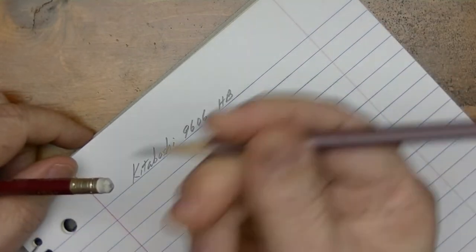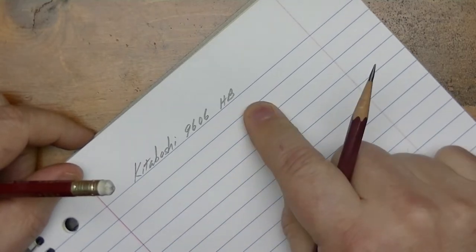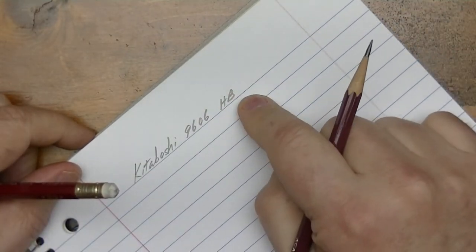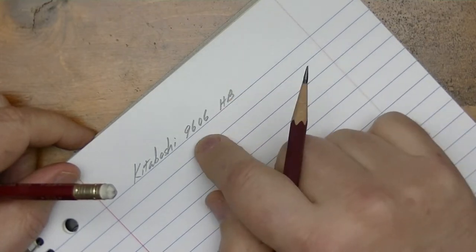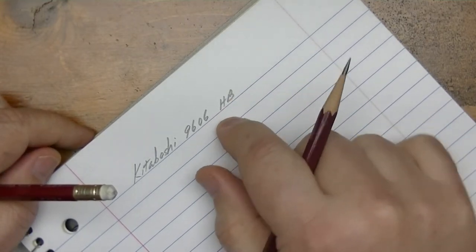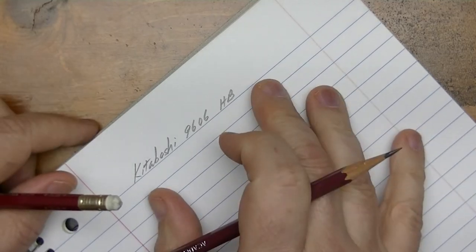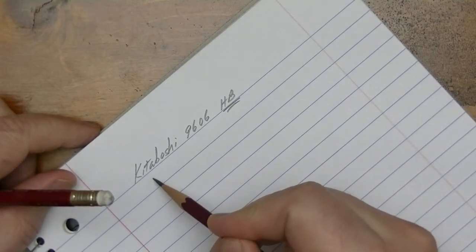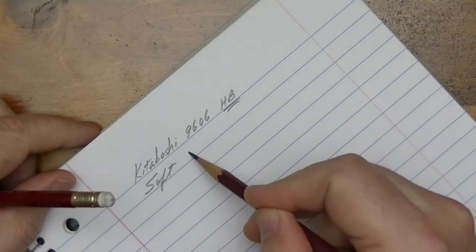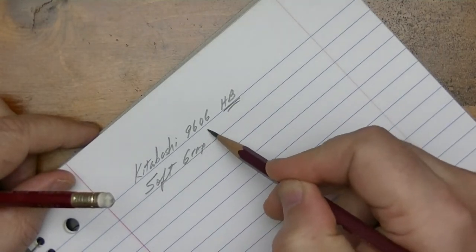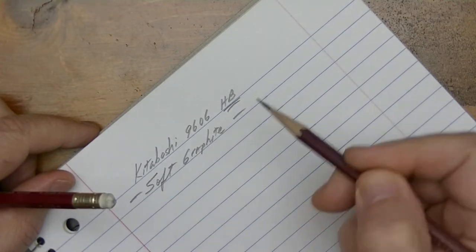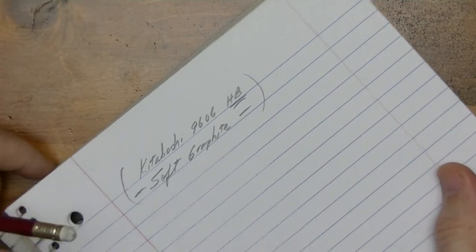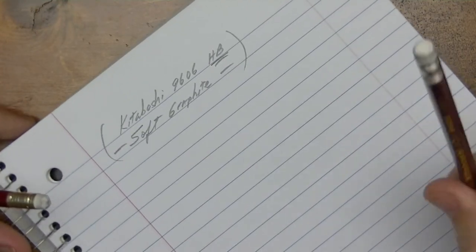Kitabashi 9606 HB. Now, right off the bat, super smooth, very dark. You have to go back to that video. Remember, I think I had it graded somewhere around kind of like a B. It acts like a B grade shade or tone, even though it is listed as an HB. It is a very soft graphite. And I absolutely would love to have more of these pencils because it's just really, really nice and a joy to write with.